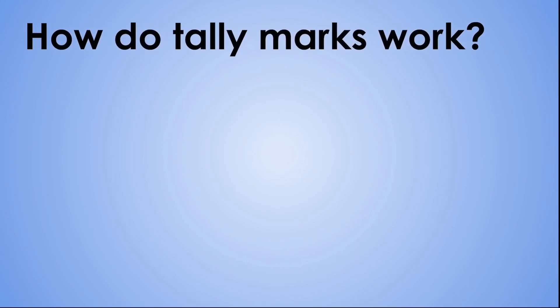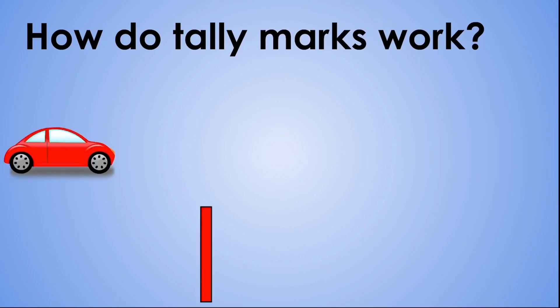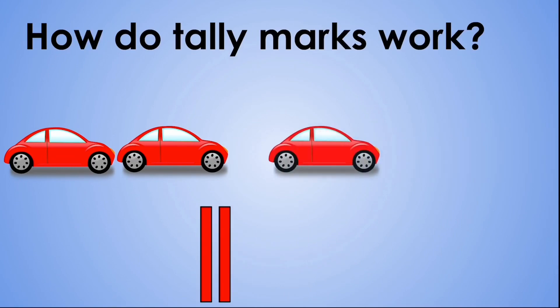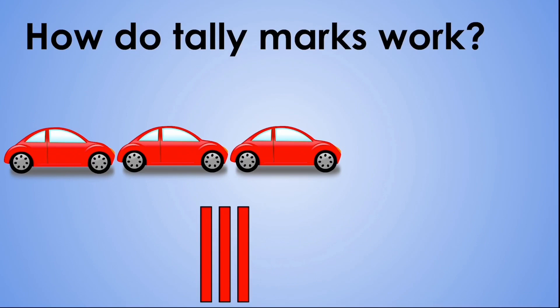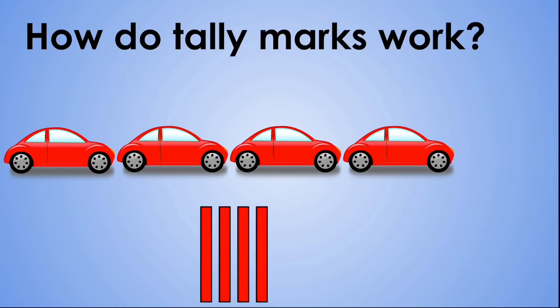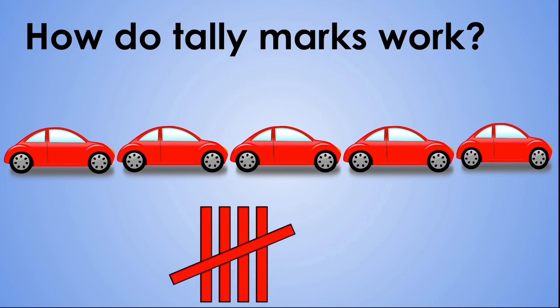How do the tally marks in a tally chart work? Let's say you are sitting on your pavement counting the amount of red cars that pass by. When the first red car passes by, you put your first tally mark. The second one passes by, you put your second tally mark. The third, fourth, and fifth red cars pass by — the fifth tally mark crosses over all the other tally marks. When you see a bunch of these, you can skip count in fives.